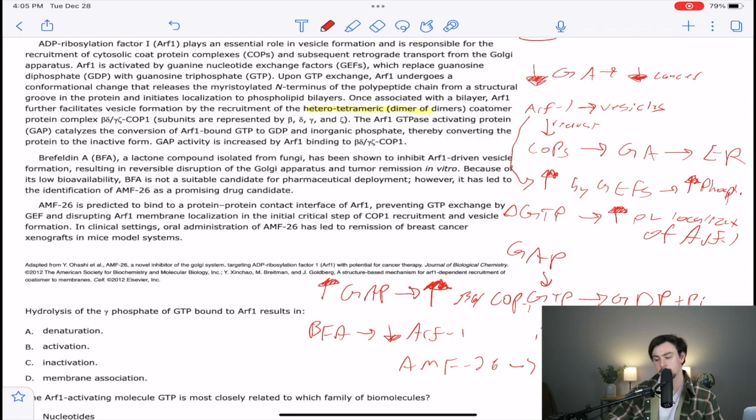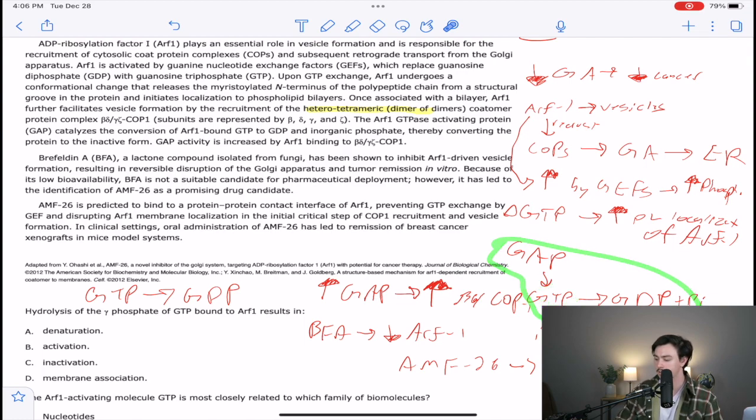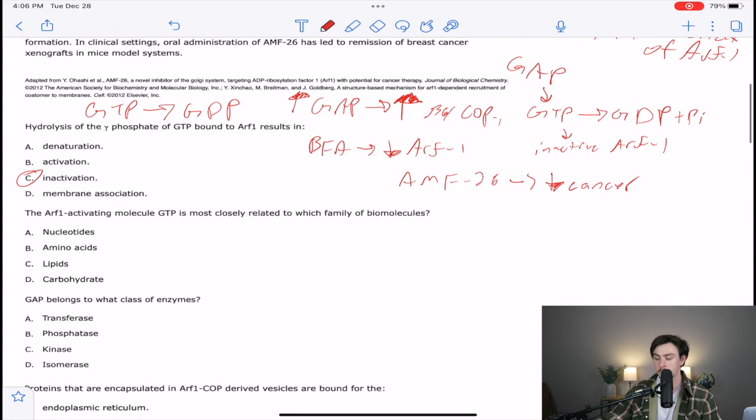So looking at this first question, it says hydrolysis of the gamma phosphate of GTP bound to ARF1 results in what? So this is essentially just saying, if we have GTP, we hydrolyze it, meaning we use water to chop it off, we end up with GDP, right? What does that do to ARF1? Well, we found out earlier in our flowchart, right here, we see that gap, it's this large relationship, but all it's saying is that we have a shift from GTP to GDP, and that inactivates ARF1. So that's really easy. That's a free question right there. The correct answer is inactivation. So the flowchart can really score you some easy points.